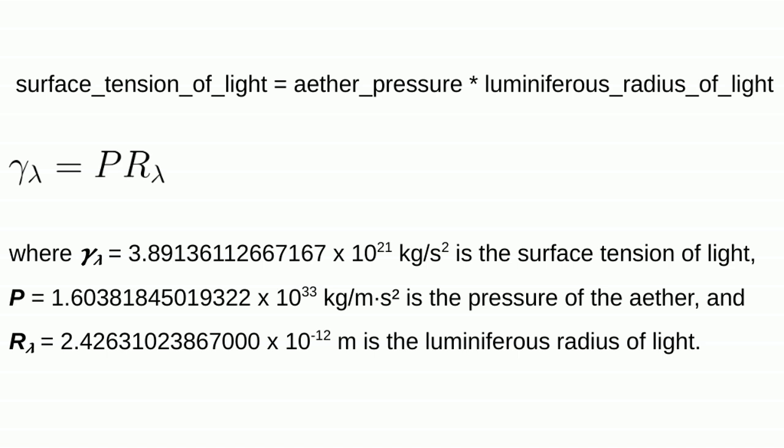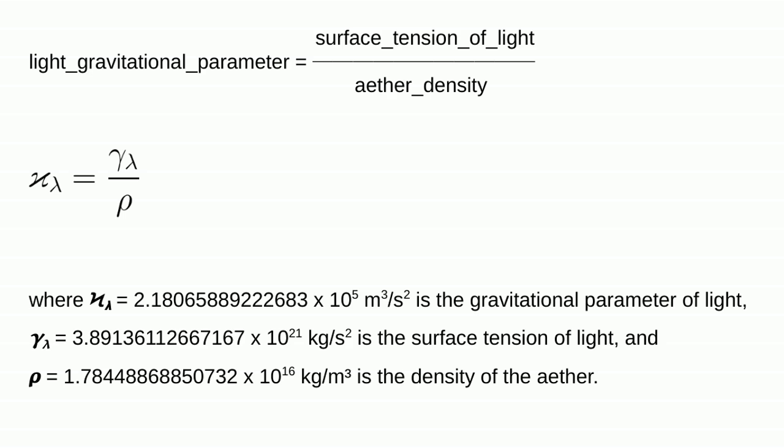It should be no surprise that light has a luminiferous radius equal to the de Broglie wavelength of an electron traveling at the speed of light, which equals the Compton wavelength. Consequently, the surface tension of light equals the pressure of the ether times the luminiferous radius of light. Just as whirling ether encapsulates the mass of particles, oscillating ether encapsulates the mass of light. As is true for all black holes, that mass produces a gravitational parameter equal to its surface tension divided by the density of the ether.